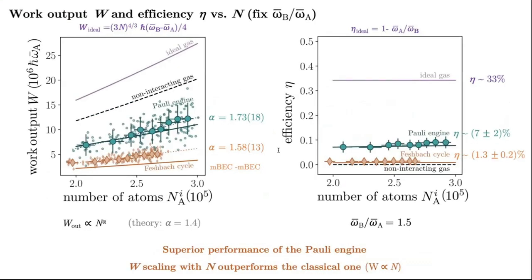This is the work output and the efficiency for a fixed compression ratio as a function of the number of particles. We can see that the Pauli engine outperforms an engine running on the bosonic side. The efficiency of the Pauli engine is about 7%, and the efficiency of the engine running on the bosonic side is 1.3%. These experimental results are in agreement with the results of other groups in the United States, and that they were using a bosonic working fluid.